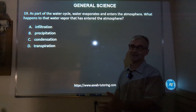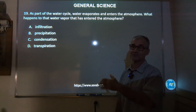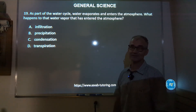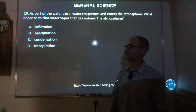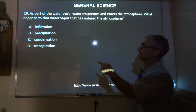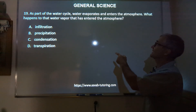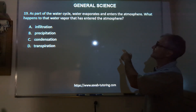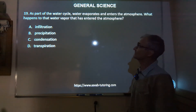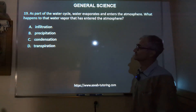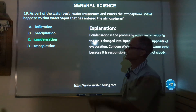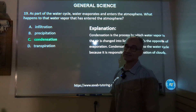If you're new to the channel, think about subscribing — it's Colfax Math. If this is helpful, hit the like button and share it with anybody else who's studying for the ASVAB or any standardized math or science test. Number 19: as part of the water cycle, water evaporates and enters the atmosphere. What happens to that water vapor that has entered the atmosphere? Correct answer is C, condensation.